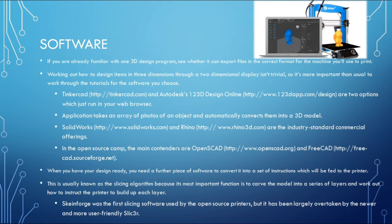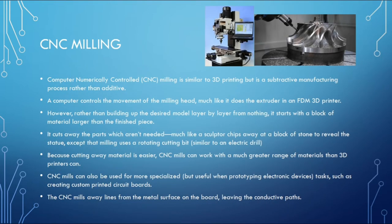Similar to laser cutting, there is no definitive software package recommended to generate 3D designs. Tinkercad and Autodesk's 123D Design online are two options that run in your browser, letting you start designing without installing any additional software. SolidWorks, Rhino, or SketchUp are other software options for making 3D designs. When your design is ready, you need a further piece of software to convert it into instructions for the printer — this is usually known as a slicing algorithm, because its most important function is to carve the model into a series of layers.